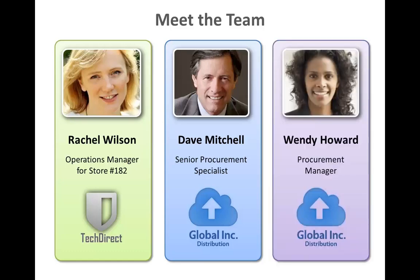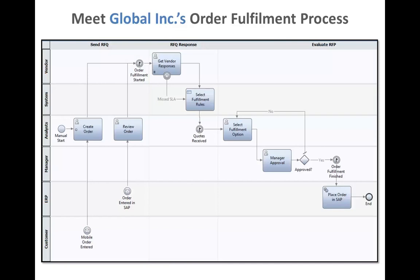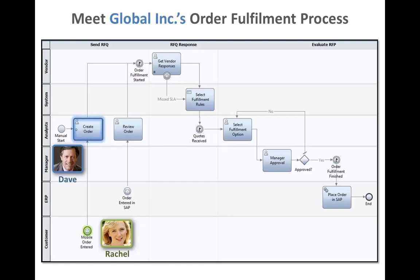And also Wendy Howard — Wendy is Dave's manager. What we're going to see in this scenario is Rachel on the store floor identifying a stock shortage in a particular product. Through her mobile device she's going to kick off the order fulfillment process run by Global Inc. Dave is going to take Rachel's information, create an order from his iPad, then later complete another process step from his laptop. Finally, Wendy will approve Dave's work from her mobile device.